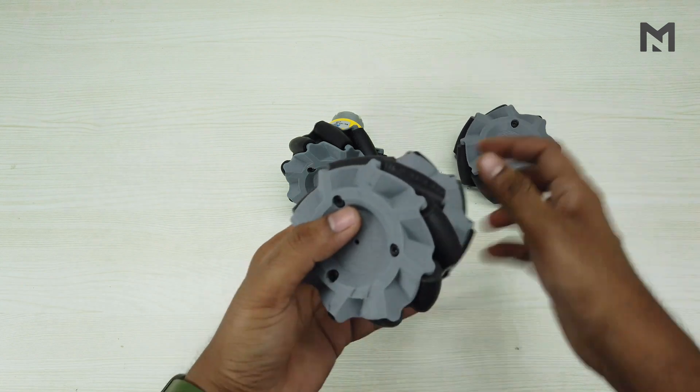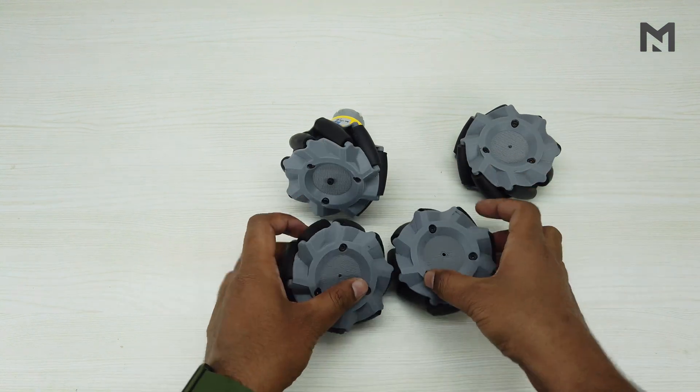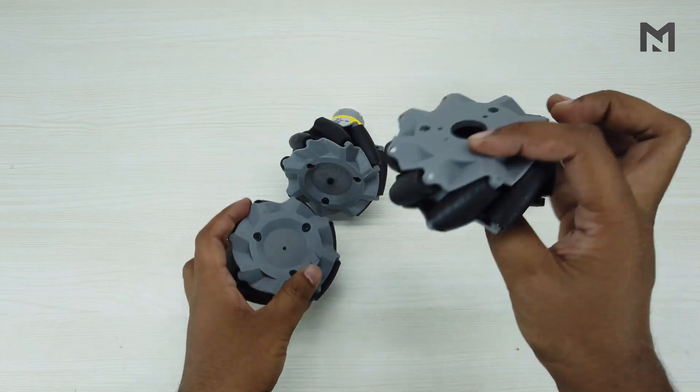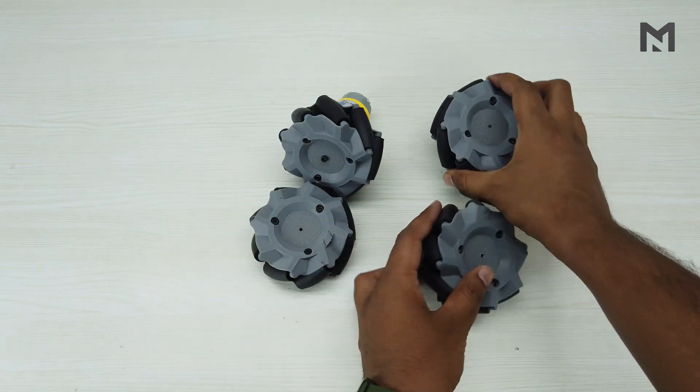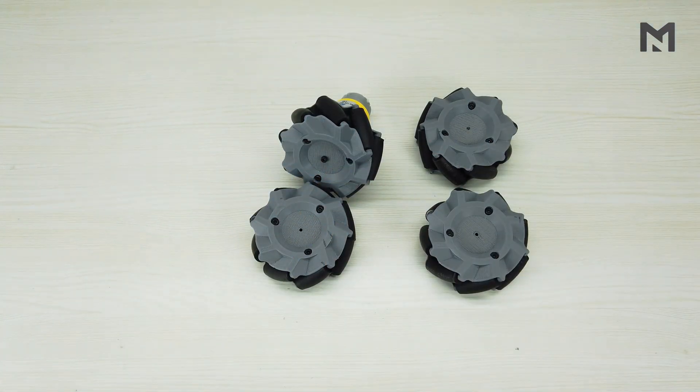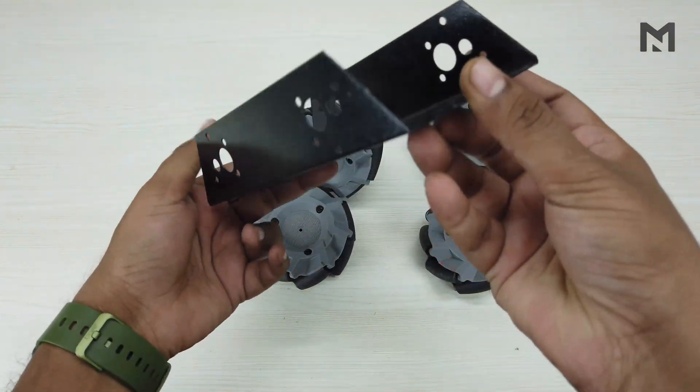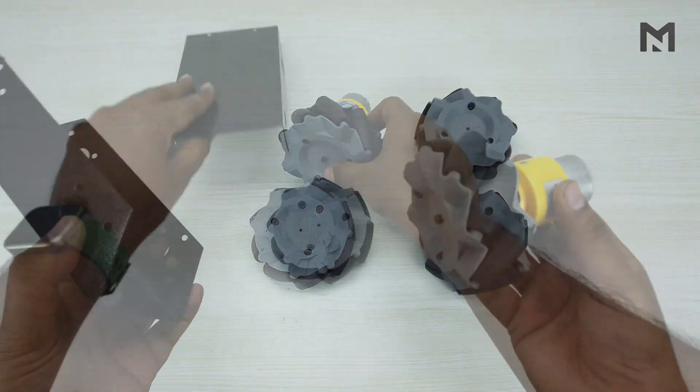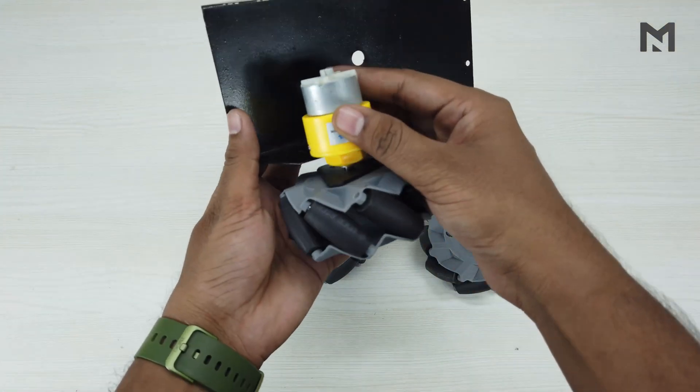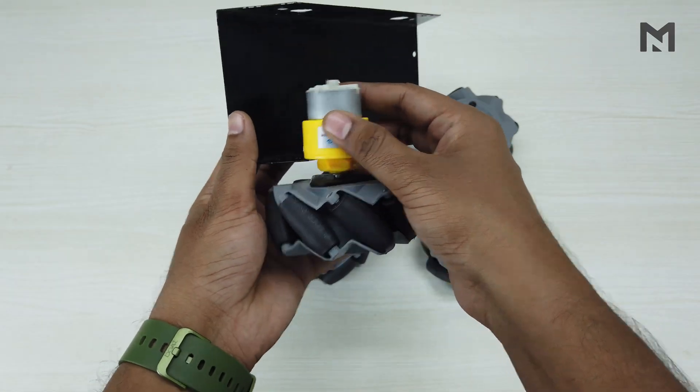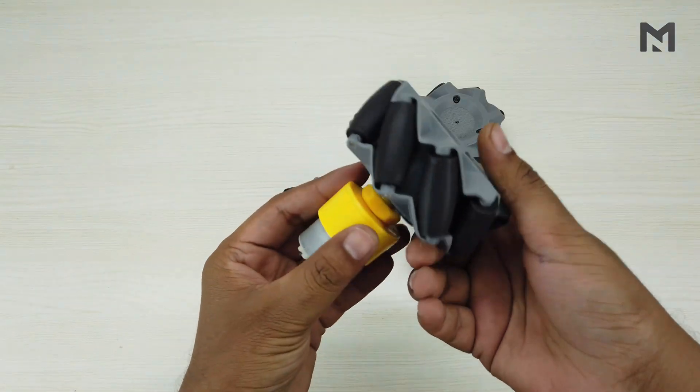I have already assembled other 3 wheels. Most robots have 4 wheels, having the same set of 2 mecanum wheels. We can connect these wheels to any chassis, like this. This is the most common robot chassis available. We have to attach these wheels through the holes. But I would not use this frame. I'll show you my next video of this project.